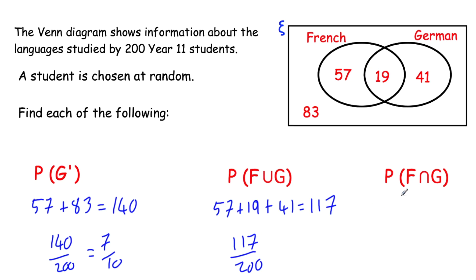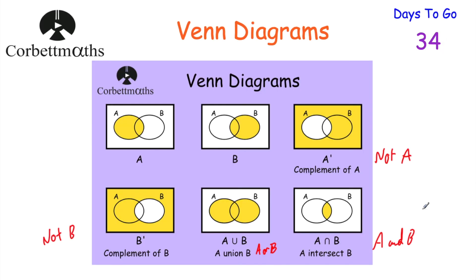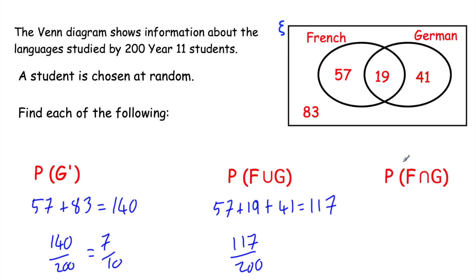For P(F∩G) — F intersect G means French and German, just the overlapping region. There are 19 students who study both French and German. So the probability is 19/200.